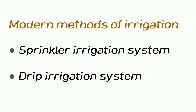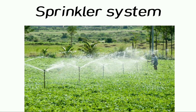Now let us study about the modern methods of irrigation. They are the sprinkler irrigation system and the drip irrigation system. Let us start by studying about the sprinkler irrigation system.